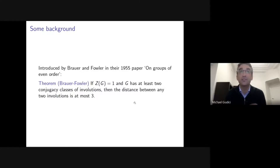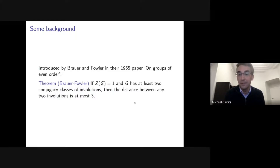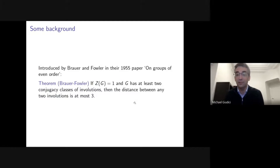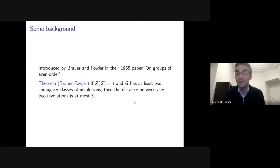They have a nice theorem which says that if the center of the group is trivial and G has at least two conjugacy classes of involutions, then the distance between any two involutions in the commuting graph is at most three. In some sense, as long as all your involutions are not conjugate, involutions are always close in the graph — always at distance at most three.